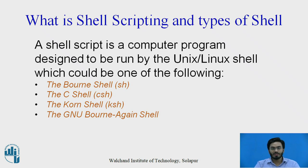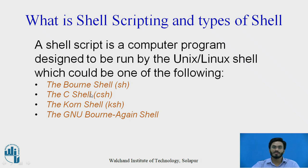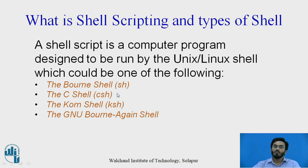Shell scripting is basically a computer program designed to be run by Linux-based systems, and it can be one of four types of shells: the Bourne shell, the C shell, the Korn shell, and the GNU Bourne Again shell (bash). Depending on the command-line interface and the operating system you are using, a particular shell will be native to that system. Things will become clearer during the demonstration.